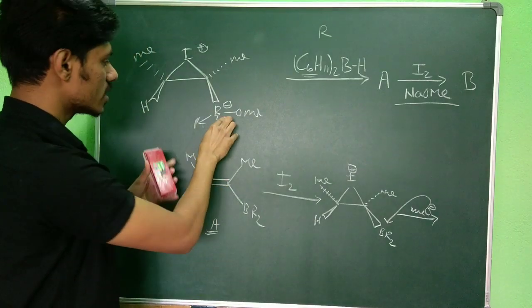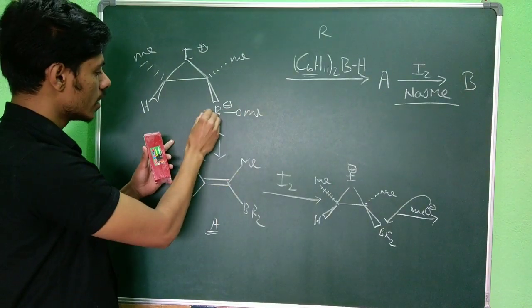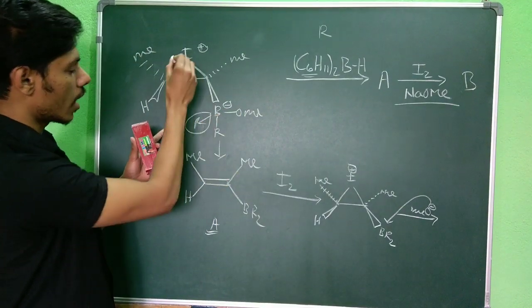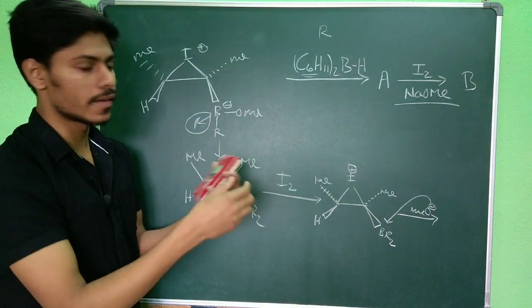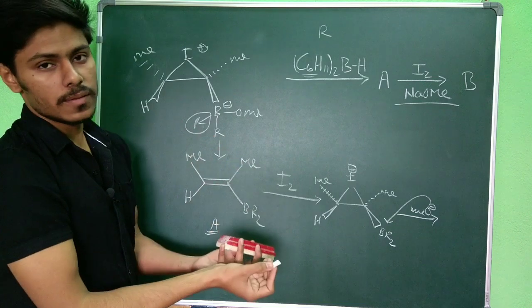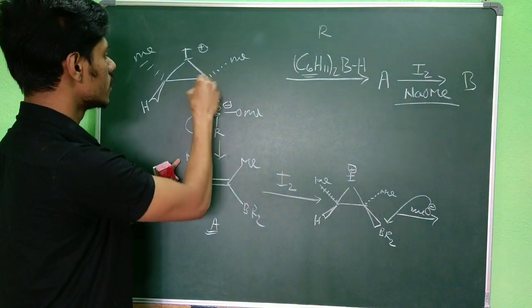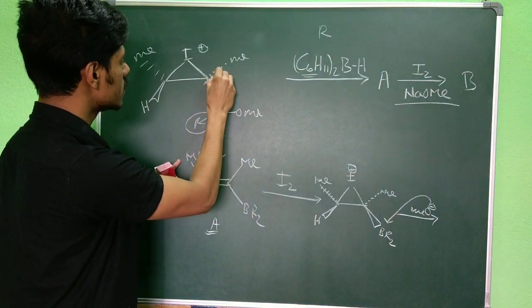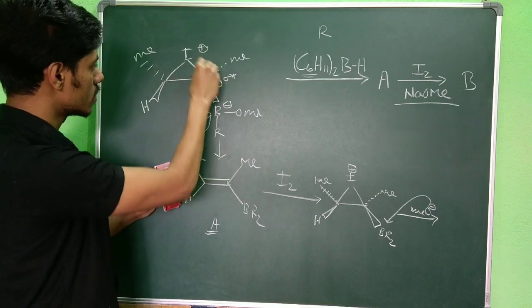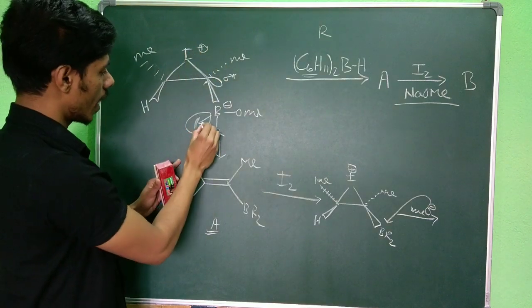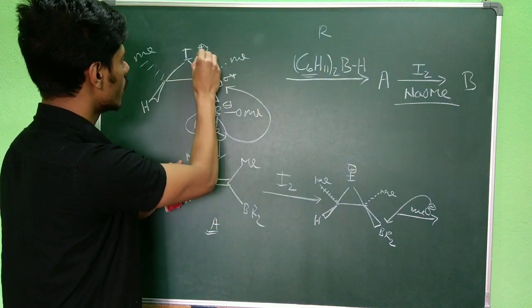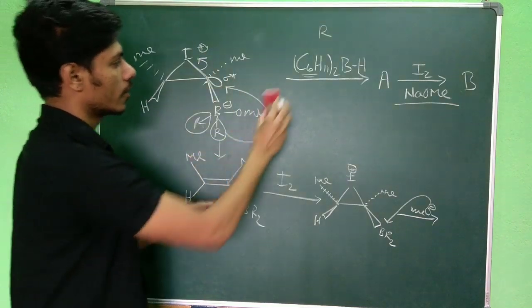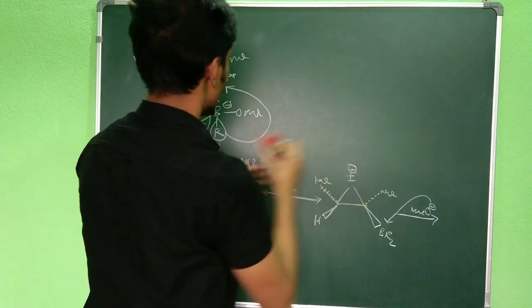It can deliver this R group like a hydride. Where will it deliver it? It will deliver it to this center because here you have the sigma star orbital - this is the sigma star orbital of this C-I bond. And this R group will go here to open this iodine cation.